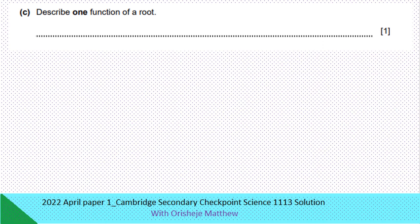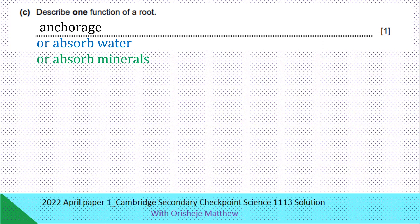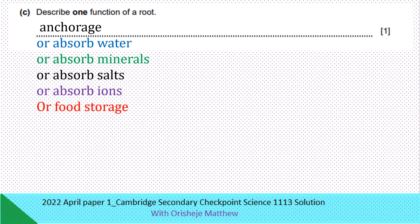Describe one function of a root. Anchorage — holding the plant to the ground. Absorb water, absorb minerals, absorb salts, absorb ions. Some roots store food — food storage. Some roots store water — water storage. Absorb nutrients.